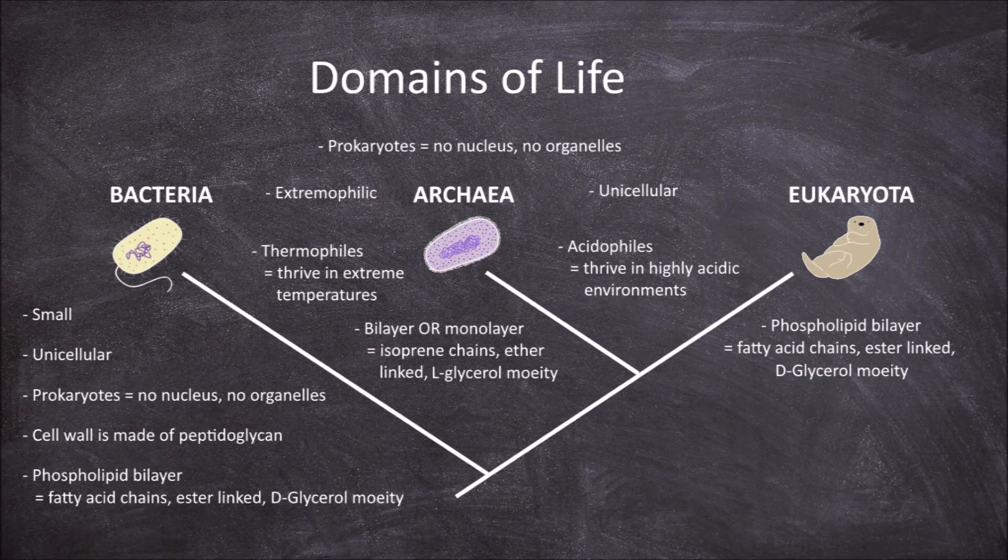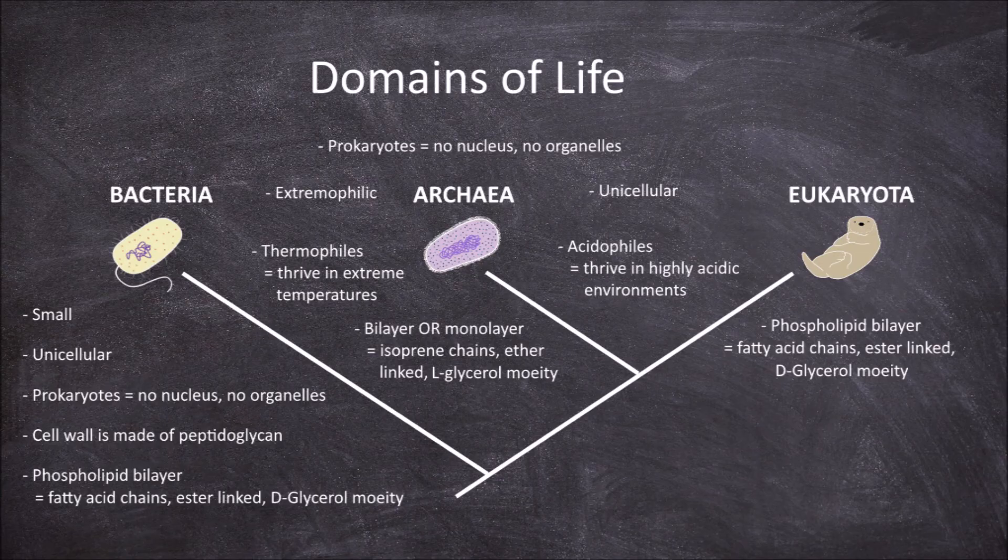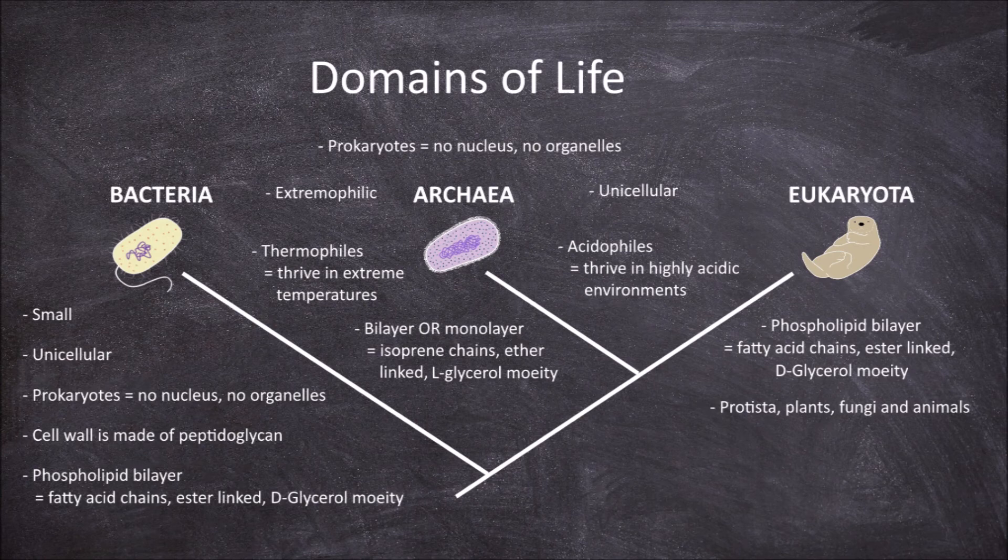The last domain is the eukaryota. The eukaryota consists of the eukaryotic organisms and include the protists, plants, fungi and animals.